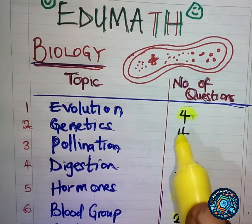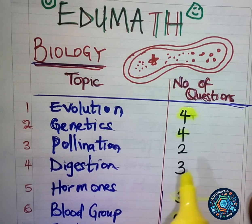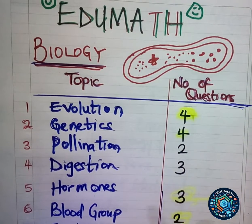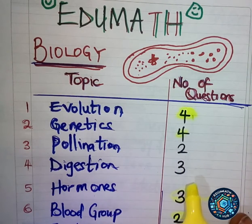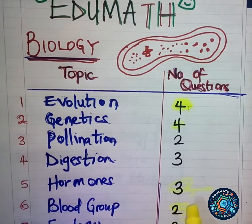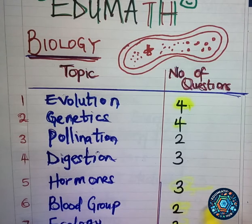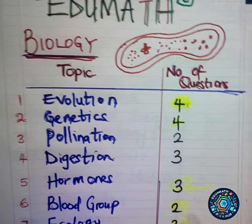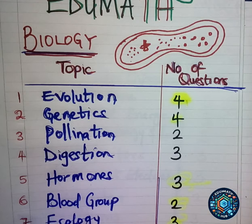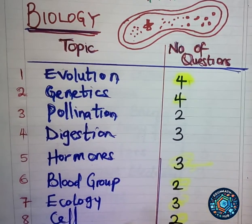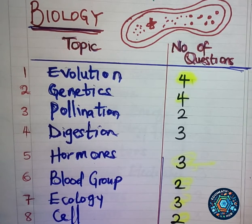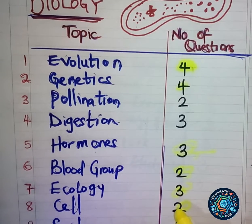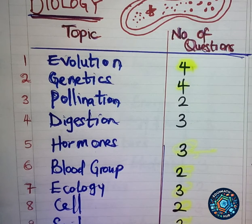Under genetics, four questions came up — JAMB is really focusing on that topic, so put more strength there. Pollination also had questions. Under digestion, three questions came out. Under hormones, three questions — talking about hormone production, the master gland and related topics. Under blood group, two questions came out covering blood transfusion, which group can't receive blood from another, and blood diseases.